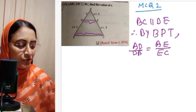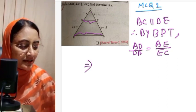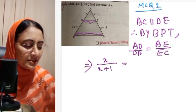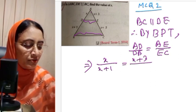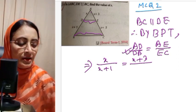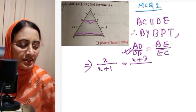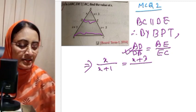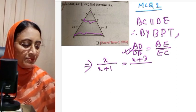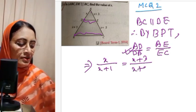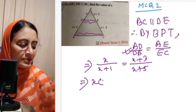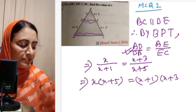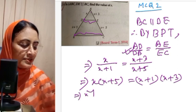Substituting the values: AD means X, DB means X plus 1, AE means X plus 3, and EC means X plus 5. So X divided by (X plus 1) equals (X plus 3) divided by (X plus 5). Cross-multiplying: X(X plus 5) equals (X plus 1)(X plus 3), so X² plus 5X equals X² plus X plus 3X plus 3.